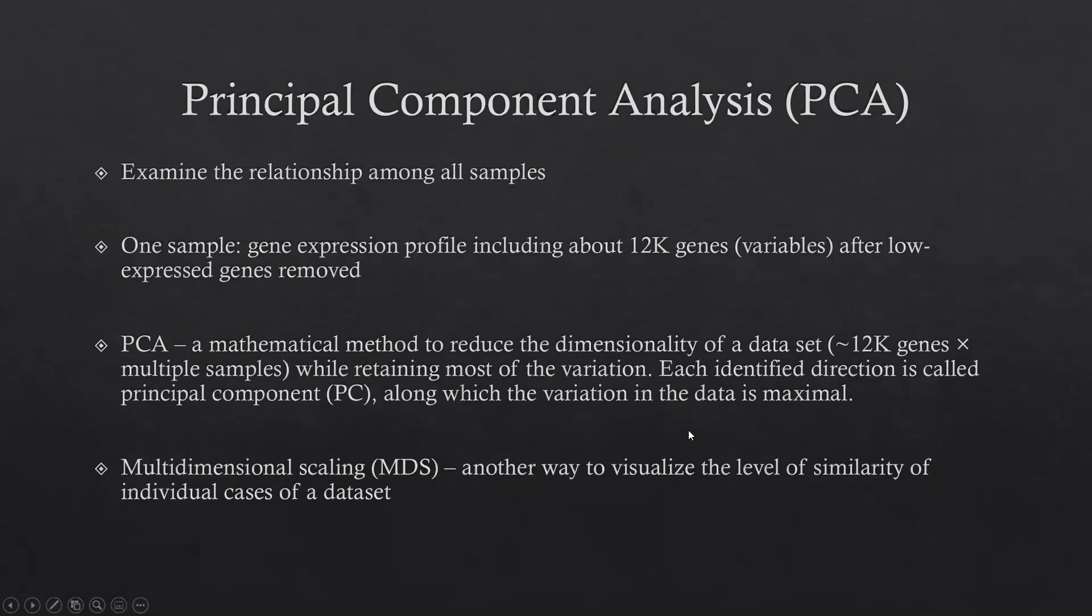PCA is a mathematical method to reduce the dimension of a data set. We cannot compare each data set in over 10,000 genes. Now we use PCA to get the main principal components to see how similar or how different samples are.